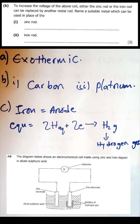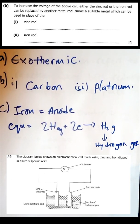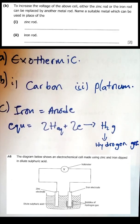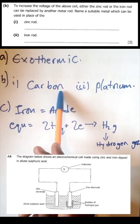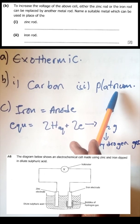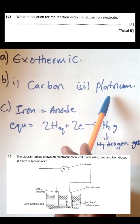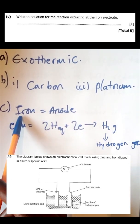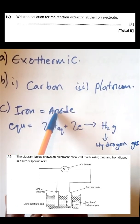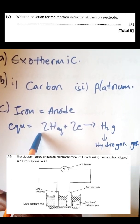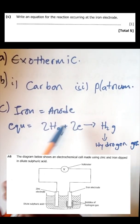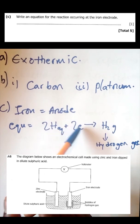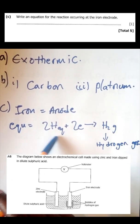To increase the voltage of the cell, either the zinc rod or the iron rod can be replaced by another metal rod. In place of a zinc rod you can use carbon; in place of an iron rod you can use platinum. Write an equation for the reaction occurring at the iron rod. The iron rod acts as an anode, and the equation at the anode shows hydrogen producing hydrogen gas. These are called half reactions.